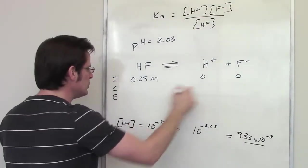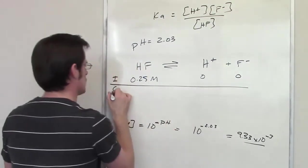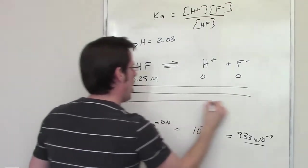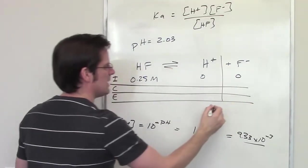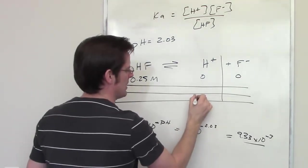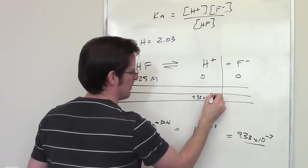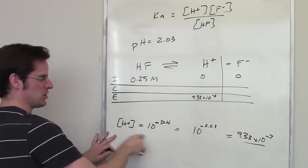I don't know what that change is right now. But when I'm all done, the final concentration of H+ at equilibrium is going to be 9.33 times 10 to the negative third. And I figured that out by using this equation.